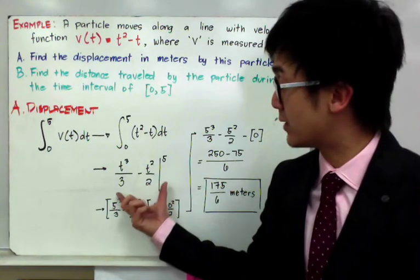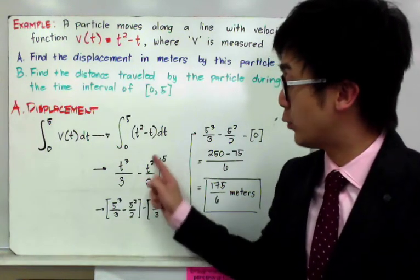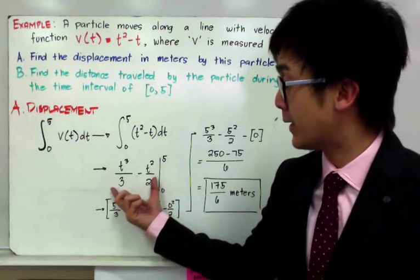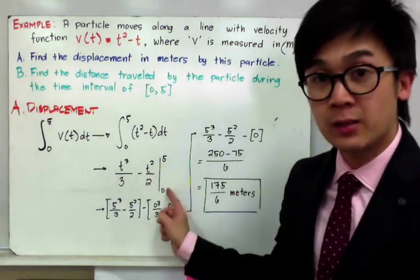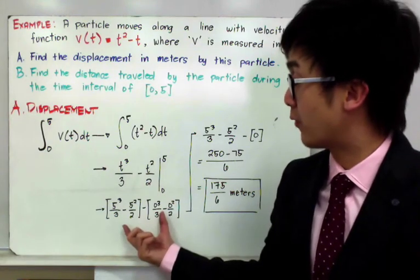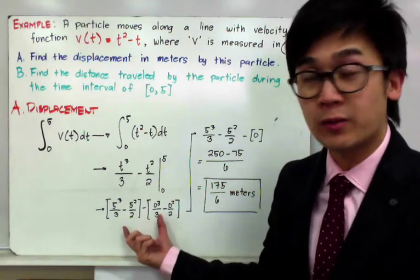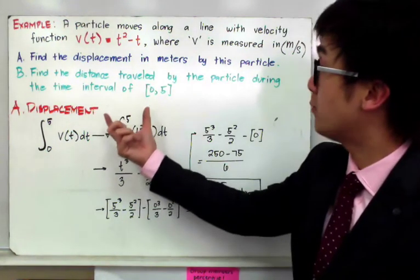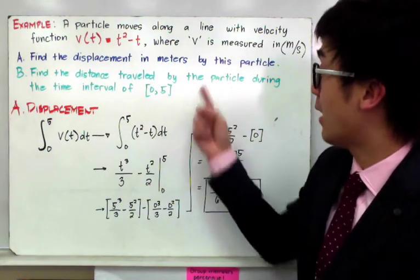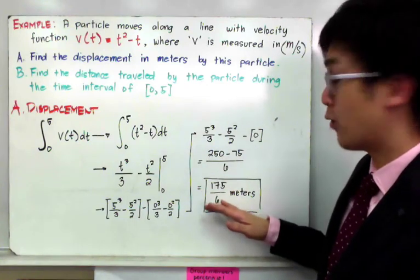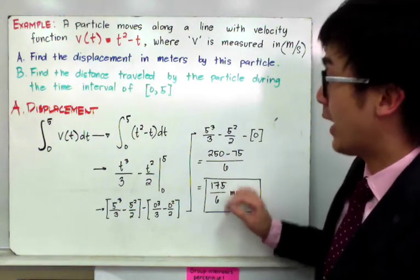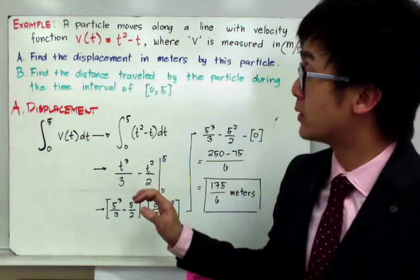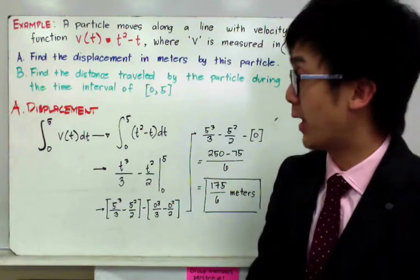To evaluate this definite integral, substitute the upper limit into the function and subtract the lower limit substituted into the function. If you perform the definite integral correctly, the displacement of this object moving in a straight line will be 175/6 meters. This is how we apply the definite integral in answering problems of a particle moving in a straight line.